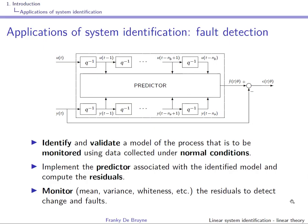The idea with fault detection is as follows. First, collect data under normal operating conditions when the system is functioning properly, then use this data to identify and validate a model. Using this model you construct a predictor — the predicted output is built from past inputs and past outputs — and then you look at the difference between the prediction and the actual output, called a residual. When this residual becomes different from what you expect, it indicates a change in the system and probably a fault.